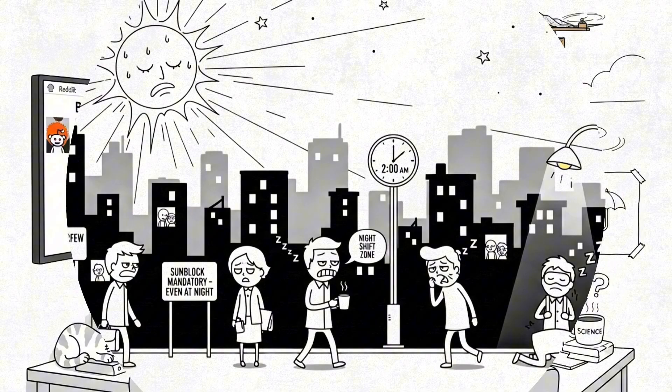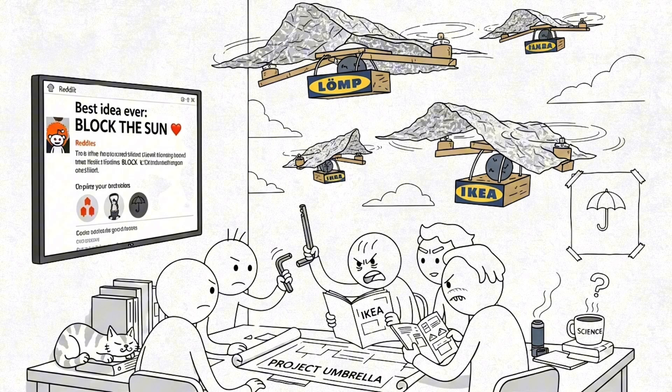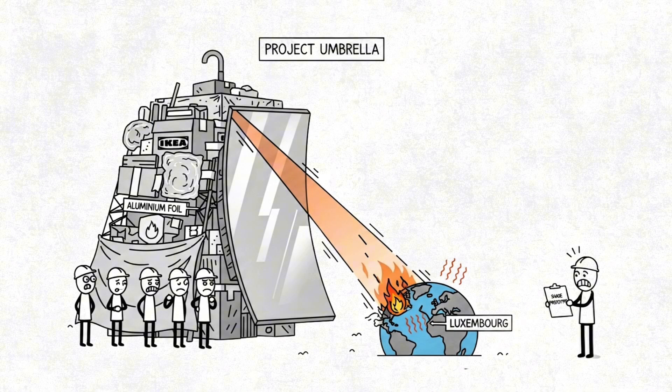Some group on Reddit starts a Project Umbrella movement to build shade drones out of IKEA furniture and aluminum foil. It all collapses when someone accidentally builds a reflector instead and sets Luxembourg on fire.